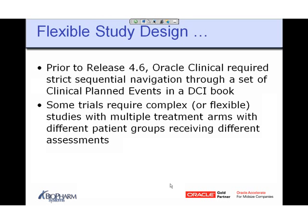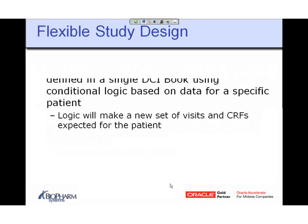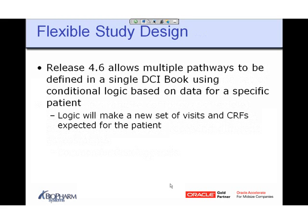In Release 4.6, we can have more automatic and dynamic assignments based on study rules — quite common for oncology trials, much more than simple trials. Flexible study design allows multiple pathways to be defined in a single DCI book. When you define that book, you define rules providing conditional logic based on data entered for a specific patient. That logic will either enable or disable sets of visits, or specific CRFs within a visit, for that patient.